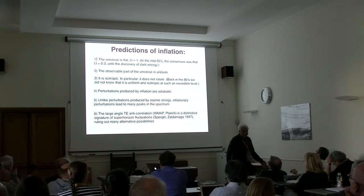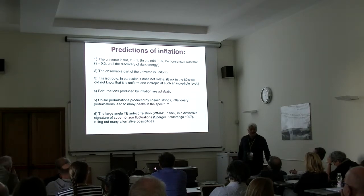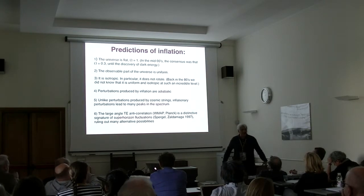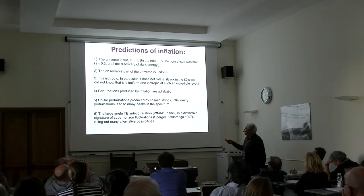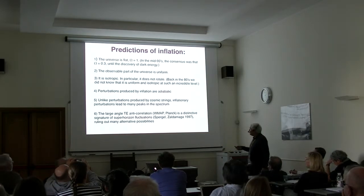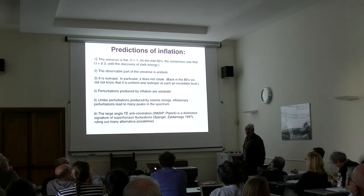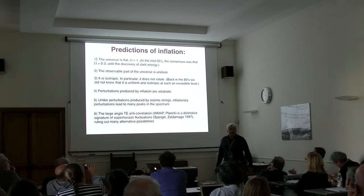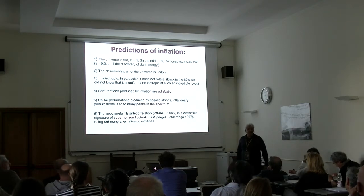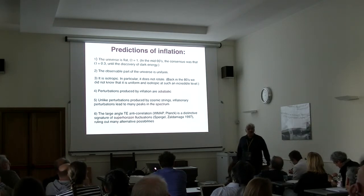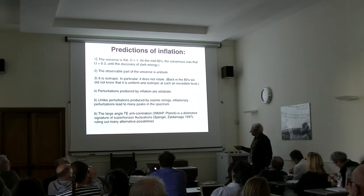Whether inflation predicts anything or not: if it predicts the universe must be flat, it can be ruled out. Instead, omega turned out to be approximately equal to 1. The observable part of the universe is also uniform — we knew that 35 years ago — but we did not know it would be uniform at the enormous level of precision recently established by WMAP and the Planck experiment.